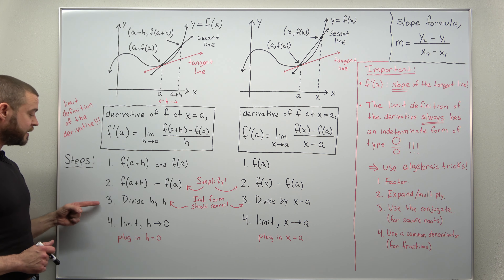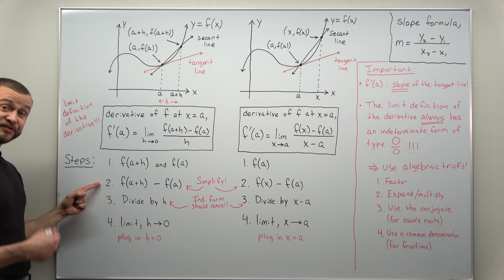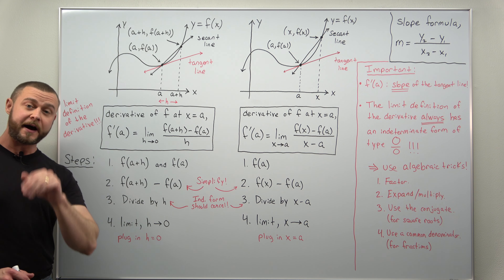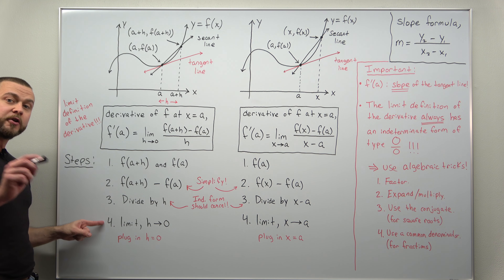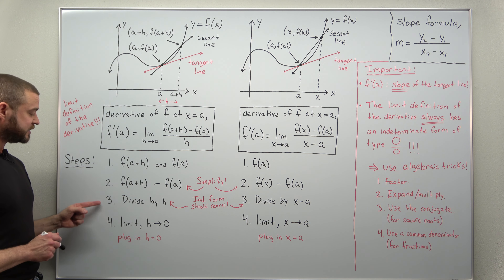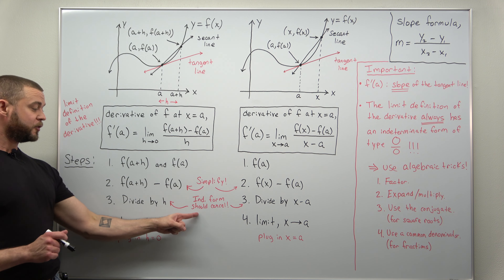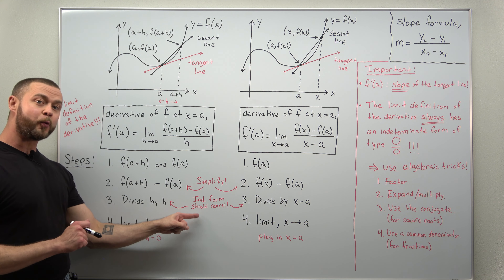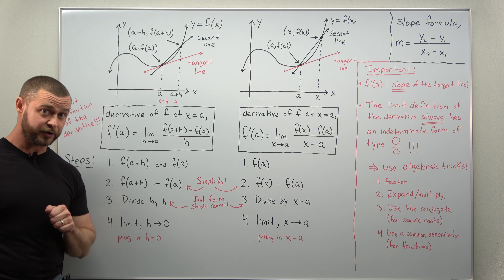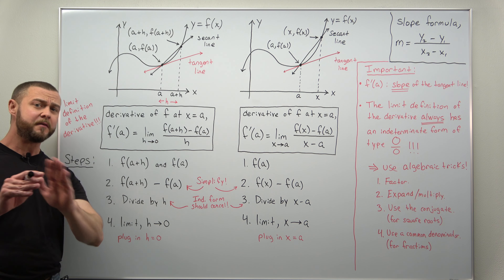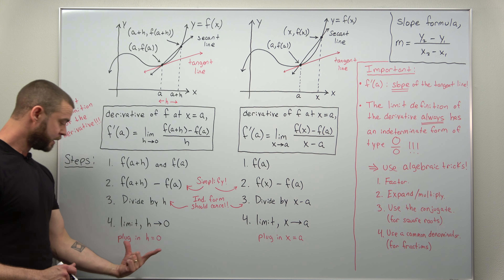Once you get through calculating the numerator, step three is to divide by h. It's very common to have a factor of h you can pull out from step two, so in step three dividing by h it will cancel. In step four you take the limit as h goes to zero. Once you complete the algebraic simplification in step three, the indeterminate form cancels out and you get a limit where you can basically just plug in h equal to zero — that happens for almost every limit definition of the derivative problem.